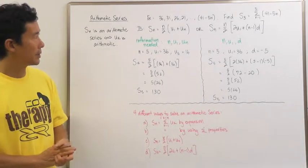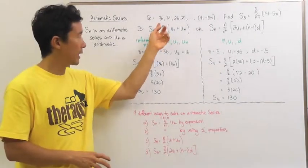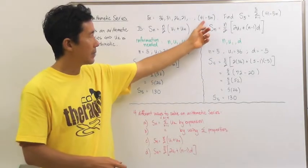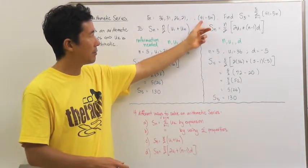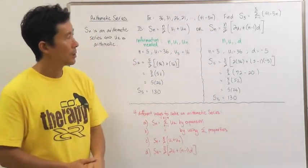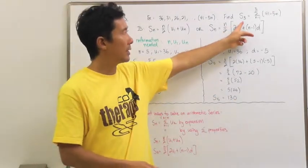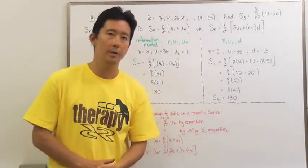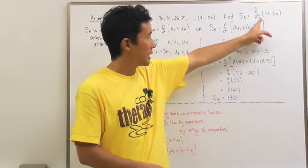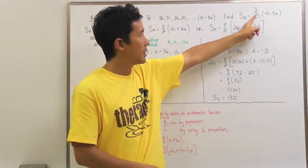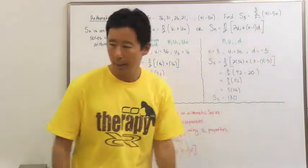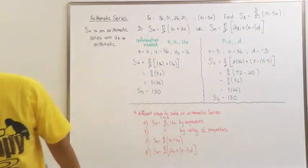Let's take a look at a particular example: 36, 31, 26, 21, where we know that the U sub N term is going to be 41 minus 5N. What we're going to do is find S sub 5, which in sigma notation is the summation from K equals 1 to 5 of 41 minus 5K.